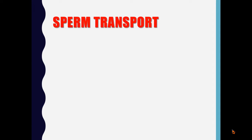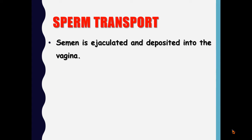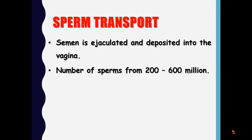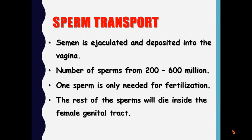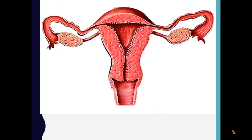How do they travel through the female genital tract? First, semen is ejaculated from the male and deposited into the female vagina. The number of sperms in this ejaculate is about 200 to 600 million; only one sperm is needed for fertilization and the rest will die inside the female genital tract. Looking at this diagram of the female genital tract: this is the vagina, the cervix, the uterus with its body and fundus, the uterine cavity, the cervical canal, and the two fallopian tubes.